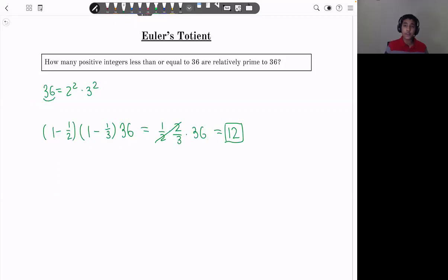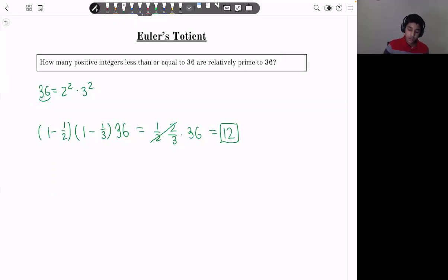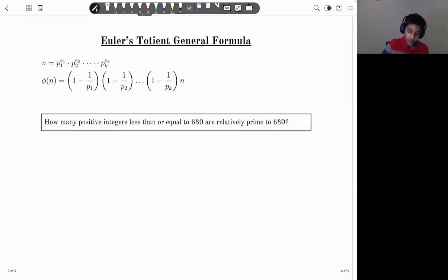So as you can see, we got the same answer as earlier. Okay, so now let's explore the general formula for Euler's totient.